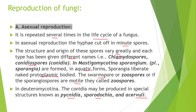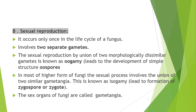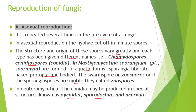Fungi have two divisions: Myxomycotina and Eumycotina, also called true fungi. Eumycotina is further classified into five subdivisions: Mastigomycotina, Deuteromycotina, Zygomycotina, Basidiomycotina, and Ascomycotina. All these are subdivisions of Eumycotina, and each group has different types of spores.